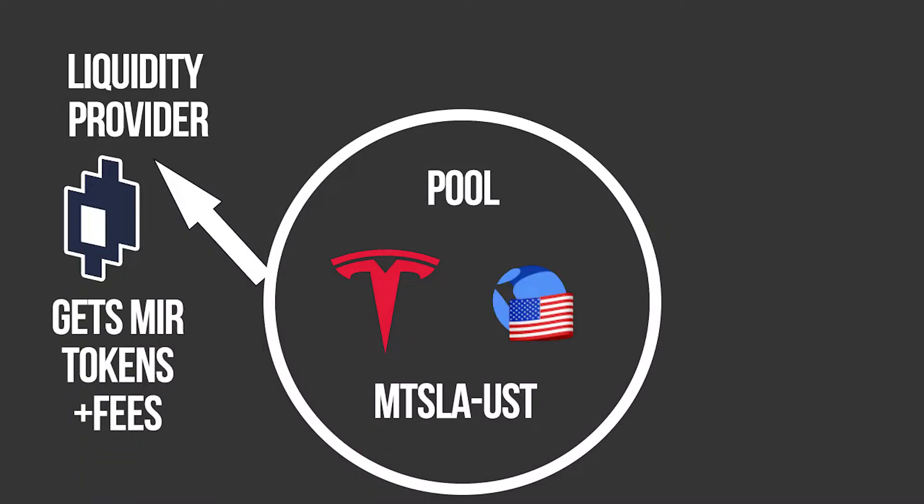Now some protocols also have incentives on top of that, because the fees when the token is new usually aren't much and people are not providing liquidity if there is no yield to be made. So protocols like the Mirror Protocol add Mirror tokens on top to incentivize people to provide liquidity. That means you have these incentives and the fees that you're getting, and usually when you're providing liquidity you get these into your wallet.